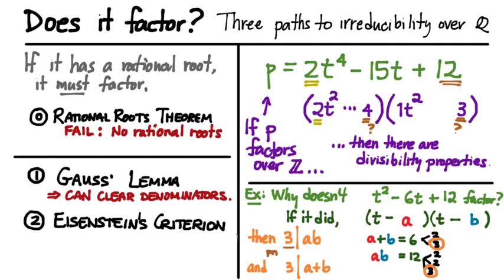We can see that 3 divides the product of a and b, which equals 12, and 3 also divides the sum of a and b, which equals 6. But 3 is a prime number, and prime numbers have the property that a prime cannot divide a product unless it divides one of the factors. So if 3 divides a times b, then 3 must divide one of a or b. Without loss of generality, let's assume 3 divides a — meaning a is a multiple of 3. But if a is a multiple of 3, then since 3 divides a plus b, b must also be a multiple of 3.